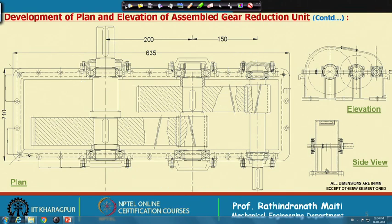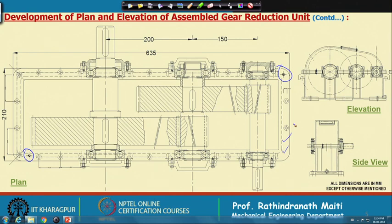Next, let me discuss the dowel pin. After planning is done on a planning machine — machining the top and bottom mating surfaces — through holes are made for the through bolts. One bolt is shown on the elevation. The bolts are put through, and a counter-bore is made on both sides so that the bolt head and nut can seat properly on the surface.